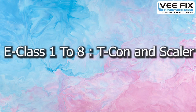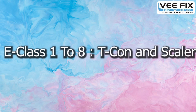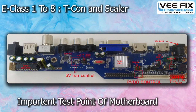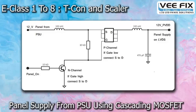We start with E-classes 1 to 8. In E-classes 1 to 8, we start with the motherboard power sequence and the important test points of the motherboard. After that, how this panel supply PVDD is created from the panel-on signal sent by the motherboard controller chip.